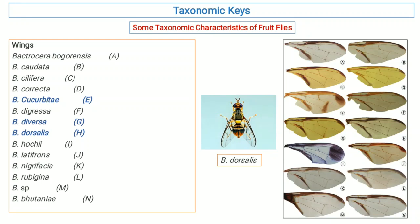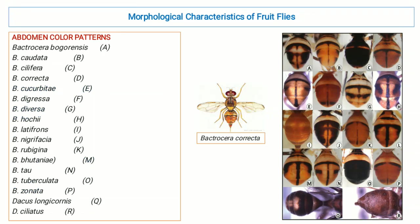Here in this figure, you can see the wing morphology of different species of fruit flies that belong to the genus Bactrocera. Figure A indicates the wing morphology of Bactrocera bocorrhensis, and in the same way Bactrocera quadata, cilifera, Bactrocera characta, Bactrocera cucurbitae, Bactrocera digressa, and all of these species.